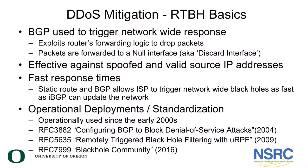DDoS mitigation using remotely triggered black hole filtering works by using BGP to trigger network-wide responses. It exploits the router's forwarding logic to drop packets by forwarding them to a null interface — configured as null zero on most devices, also called the discard interface. If a route points to a null interface as the next hop, the packet gets dropped at that router.